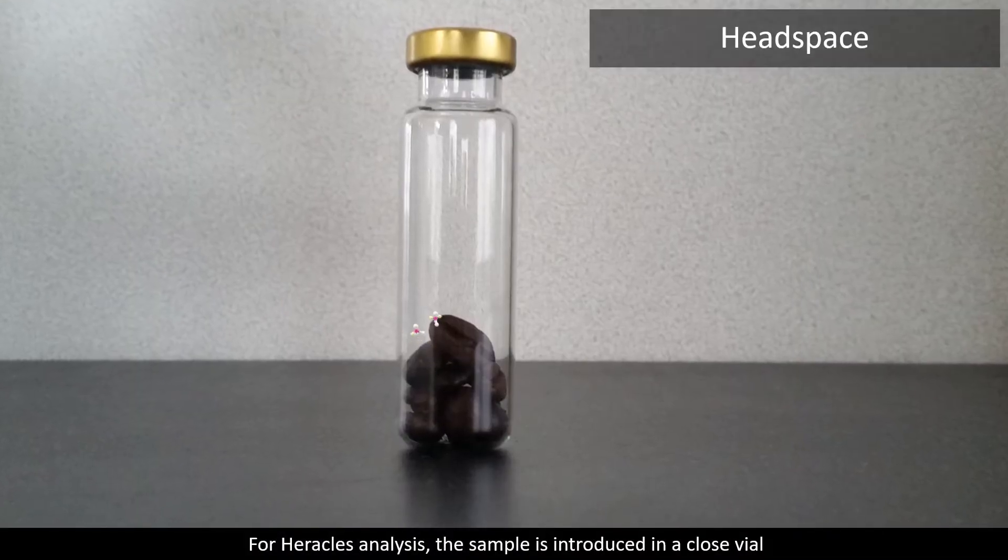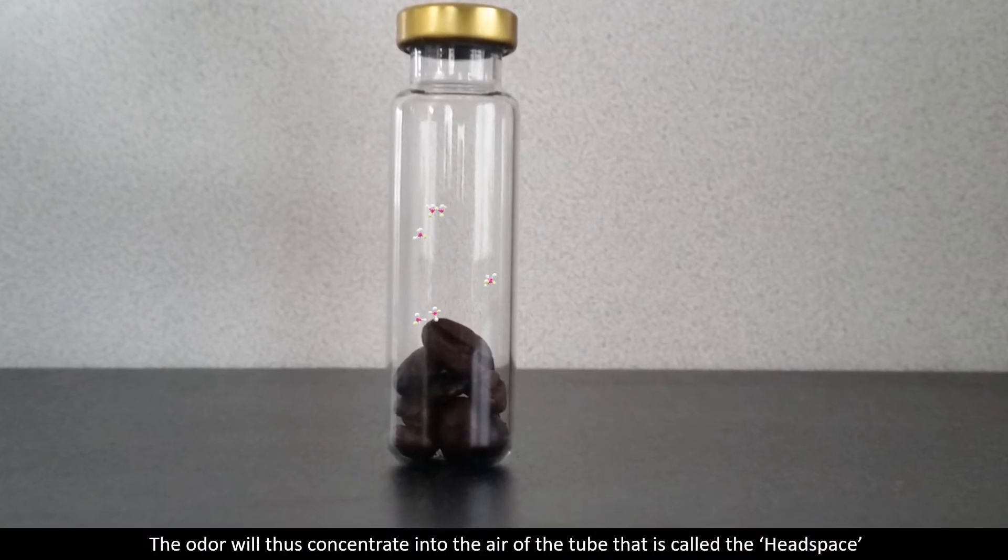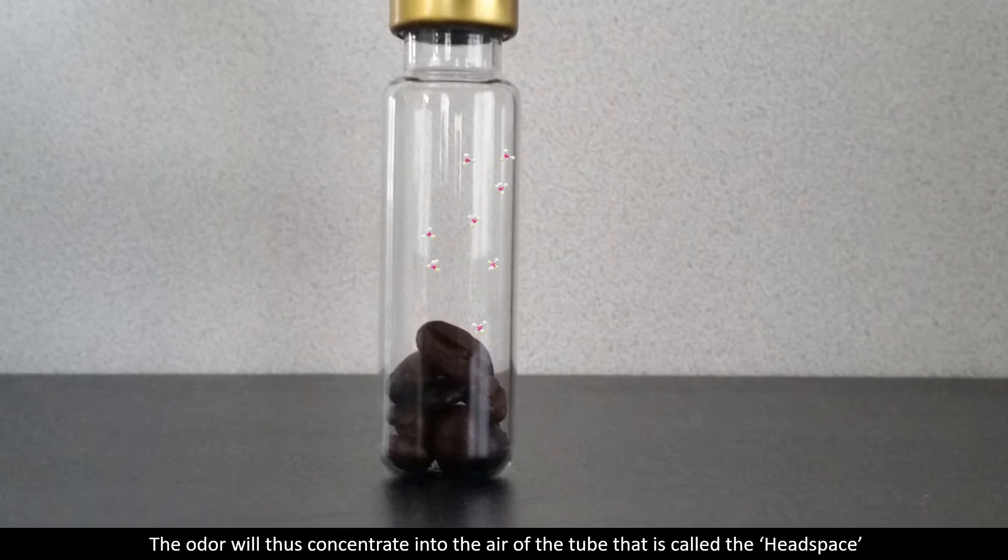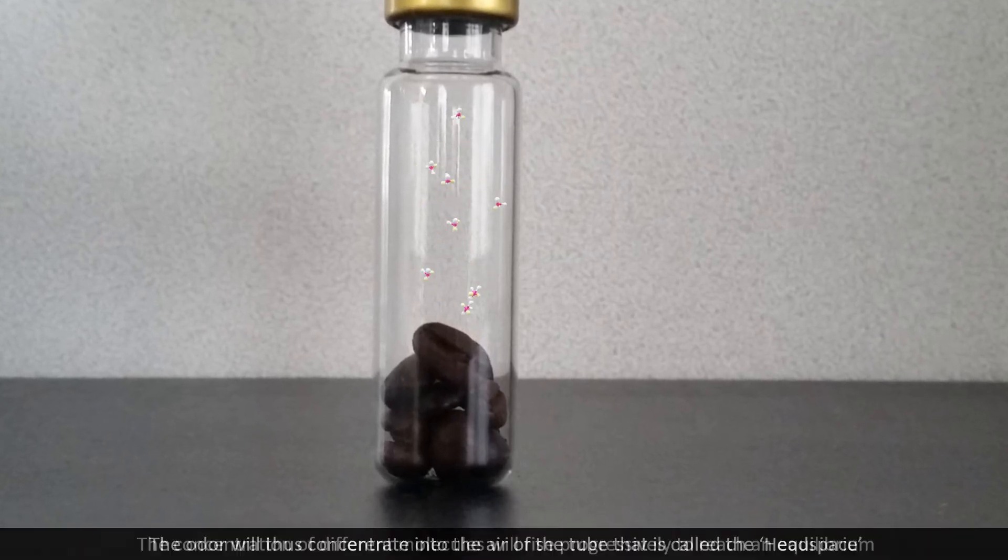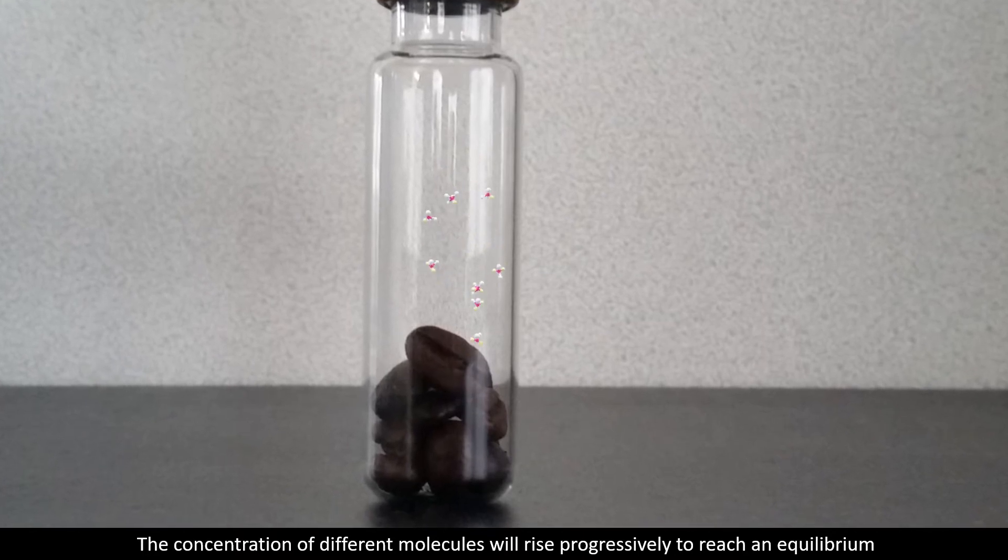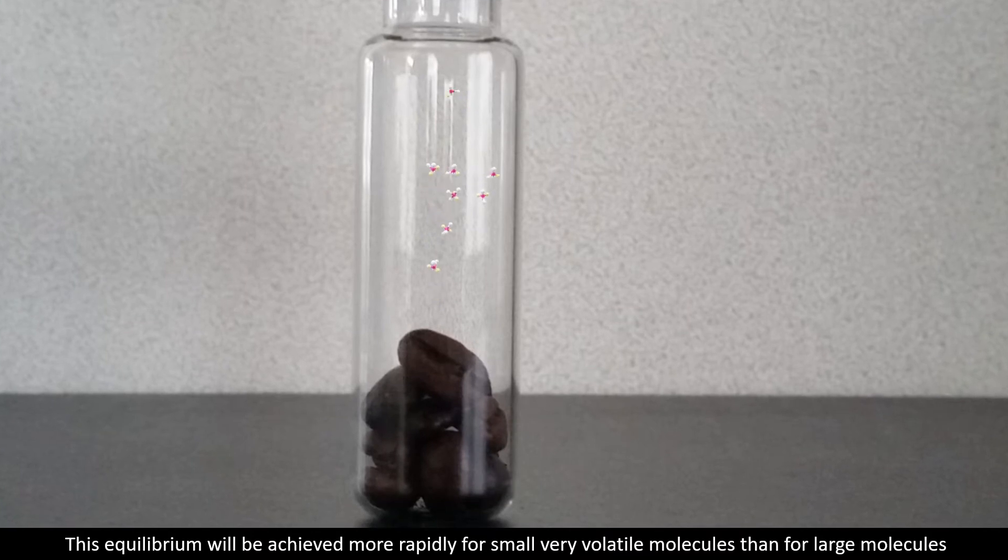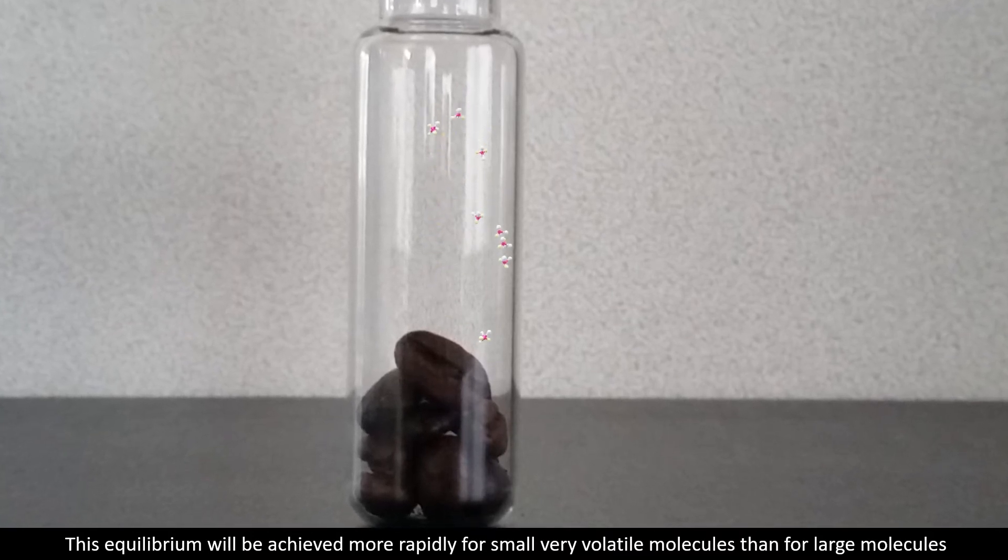For Heracles analysis, the sample is introduced in a closed vial. The odor will thus concentrate into the air of the tube that is called the headspace. The concentration of different molecules will rise progressively to reach an equilibrium. This equilibrium will be achieved more rapidly for small, very volatile molecules than for large molecules.